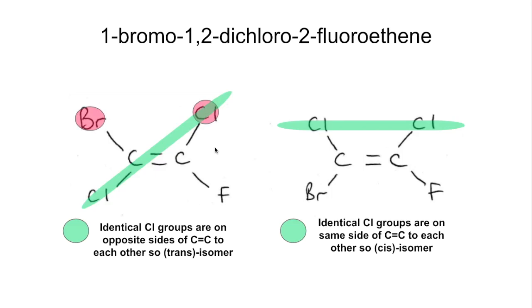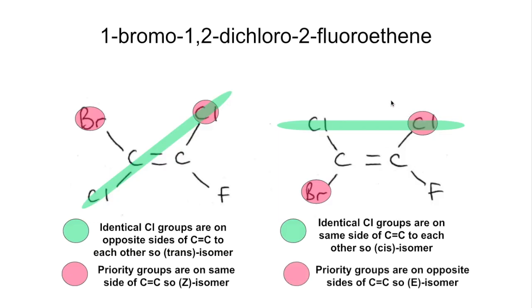Your priority groups are both on the same side of the double bond, so this is actually the Z isomer. On this one we can see that the priority groups are diagonally opposite each other, on opposite sides of the double bond, and so this is the E isomer.